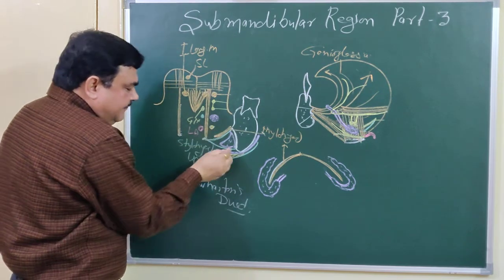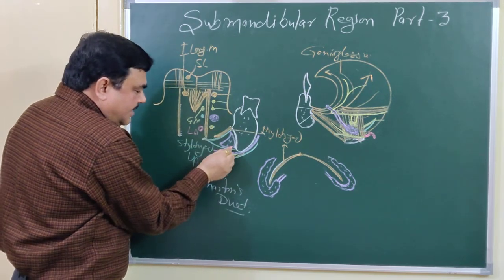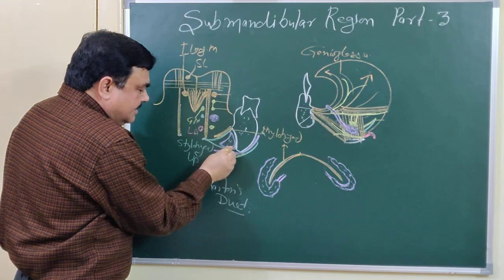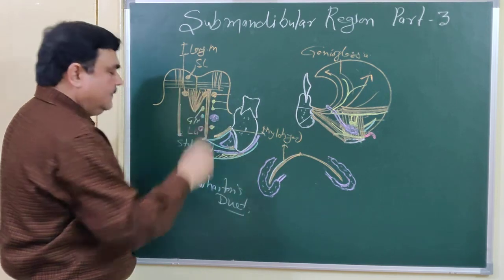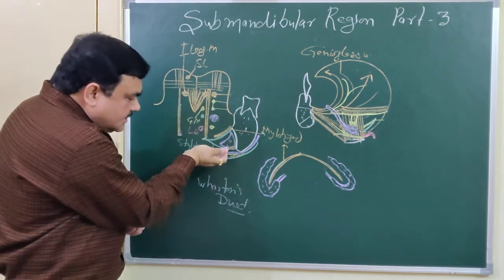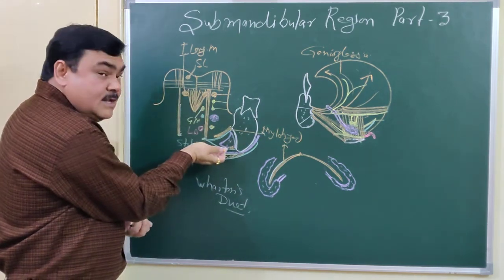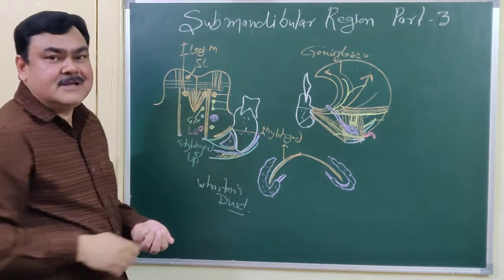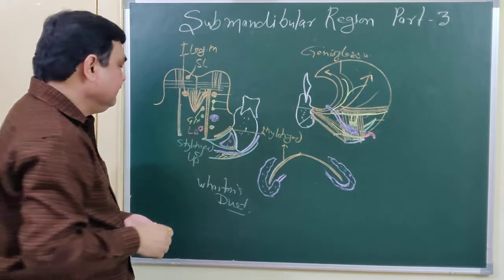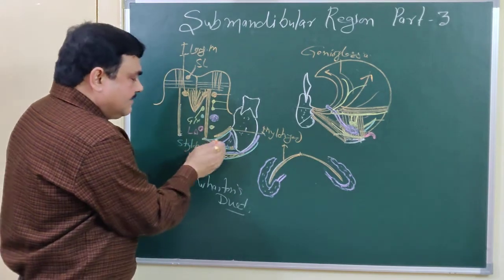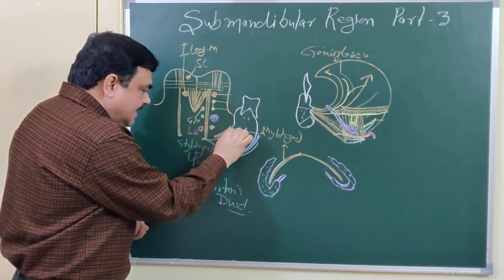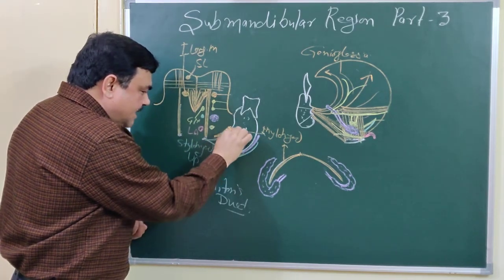Another structure here is a lymph node. There is the deep fascia — the investing layer of the deep fascia. Here it is split and encloses the lymph node. This lymph node is present here. So this is the relation of the inferior surface of this gland.